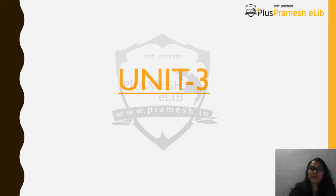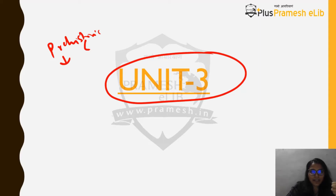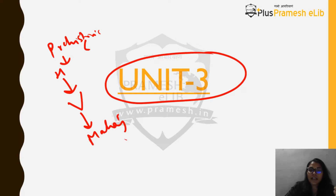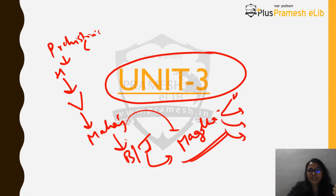Let's begin with Unit 3. We've already covered two units, starting from prehistoric times — Paleolithic, Mesolithic, and Neolithic — then the Harappan civilization, the Vedic Age, the Mahajanapadas, the rise of Buddhism and Jainism, and the Magadha dynasties: Haryanka, Shaishunagas, Nandas, and Mauryas.